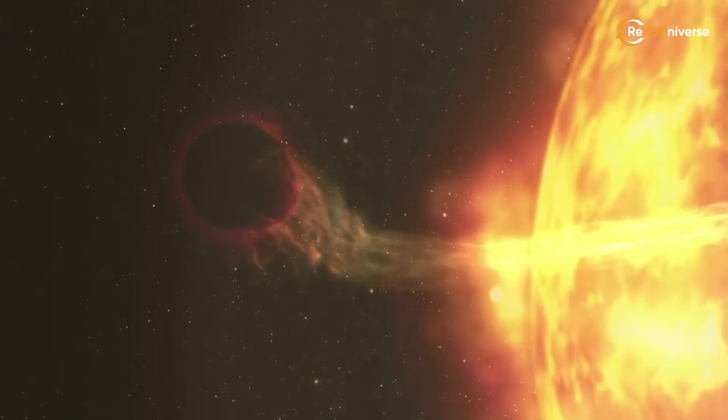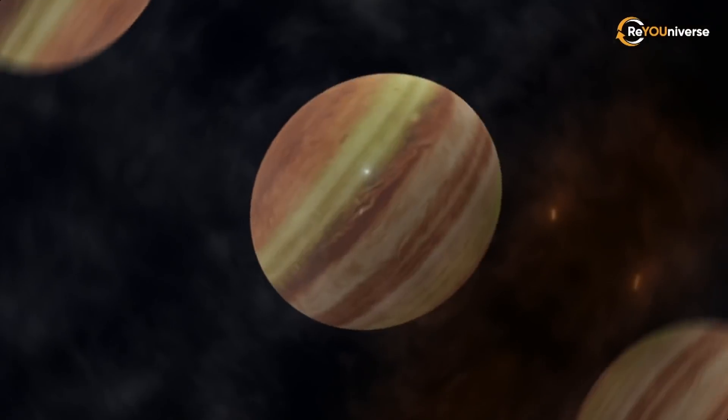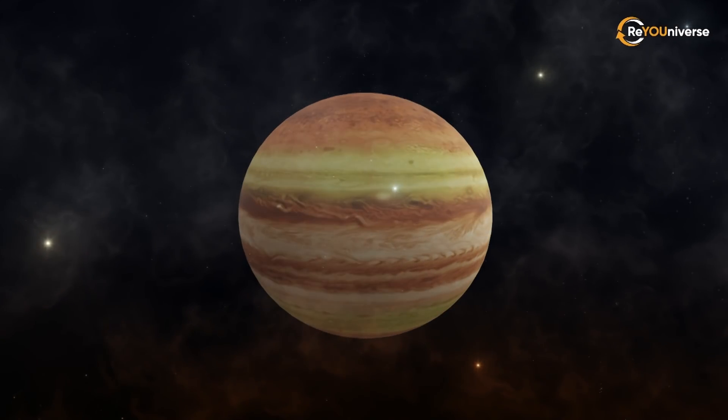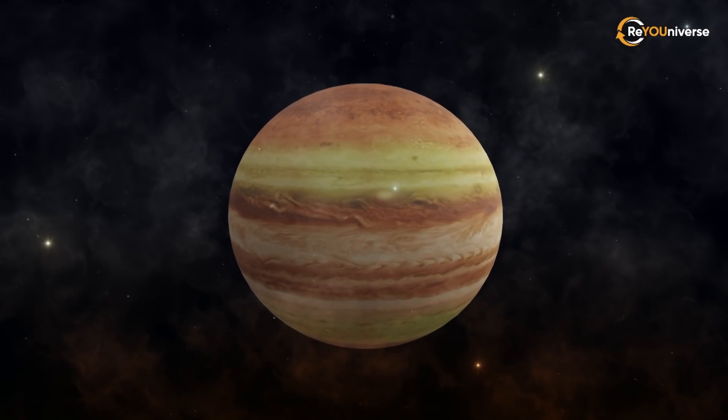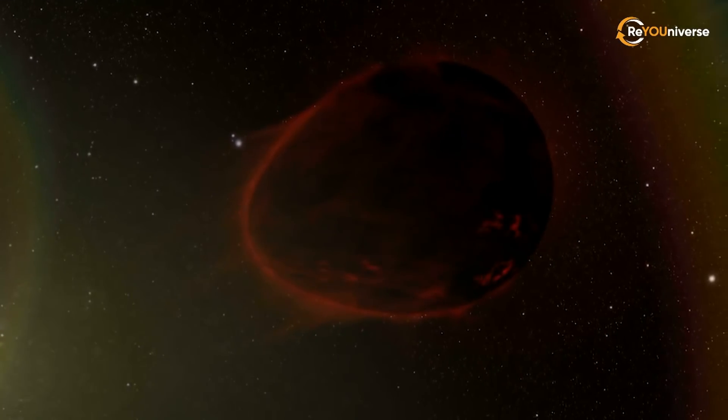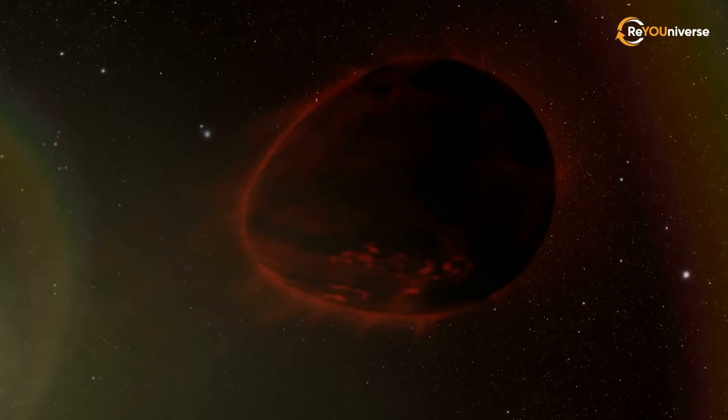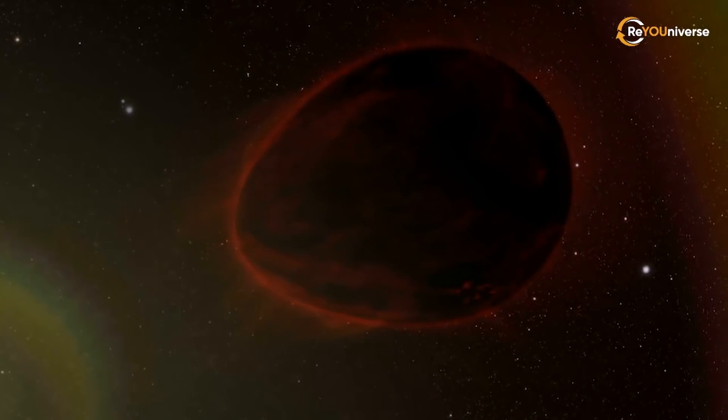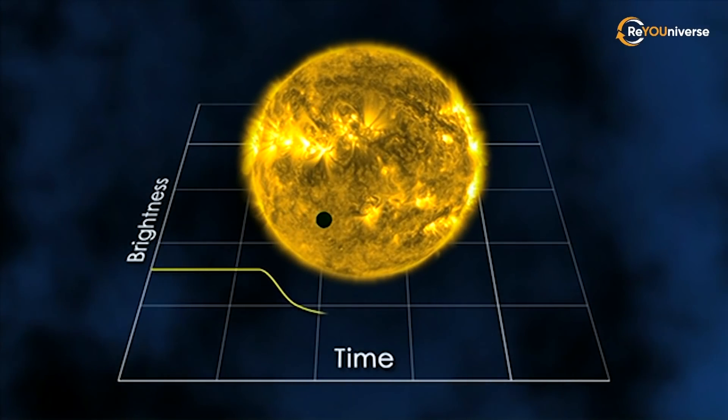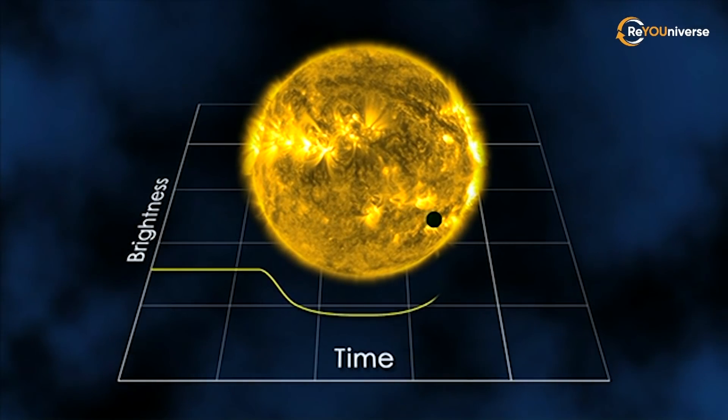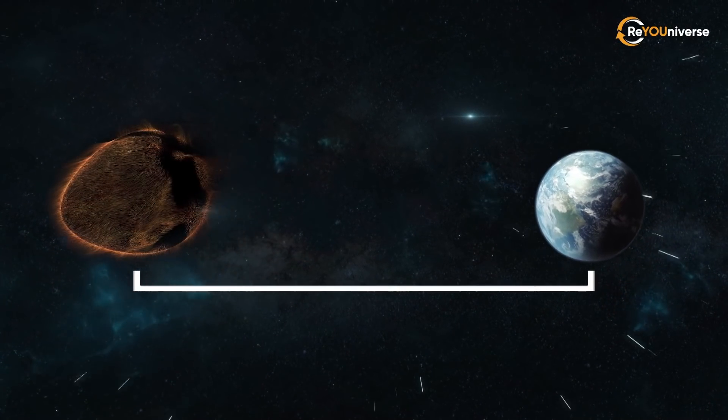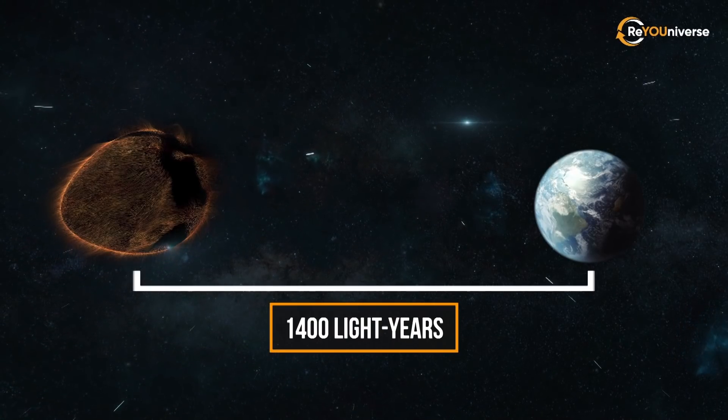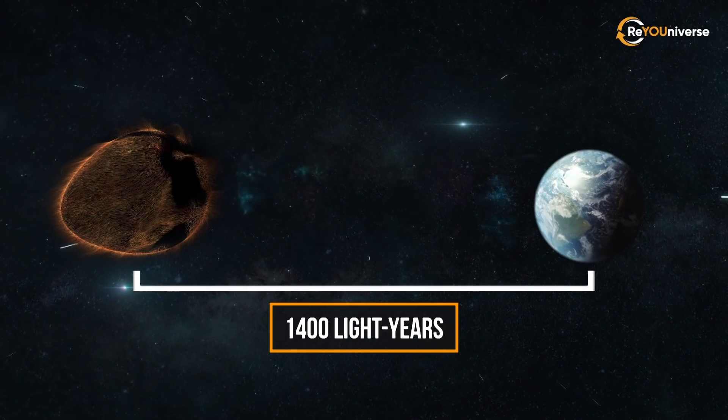The next planet on our virtual journey is doomed to vanish in the next 10 million years. The planet is WASP-12b, a hot Jupiter of the most extreme kind. It is an ultra-hot, orange gas giant that is 1.5 times heavier than Jupiter. The planet was discovered in 2008 by the transit method. WASP-12b is located about 1,400 light-years from Earth in the Auriga constellation.